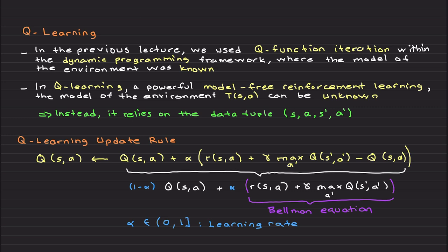Instead, today in Q learning, which is a powerful model-free reinforcement learning, we don't require the knowledge of this transition function. It can be unknown. Instead, we will rely on the knowledge of S, A, S prime, and A prime, but really S, A, and S prime.